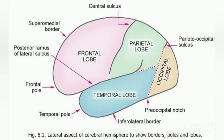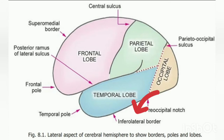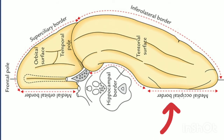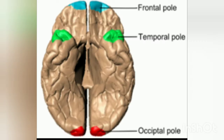It has four borders. The superior medial border separates the superior lateral surface from the medial surface. The inferolateral border separates the superior lateral surface from the inferior surface. The medial orbital border separates the medial surface from the orbital surface. The medial occipital border separates the medial surface from the tentorial surface.